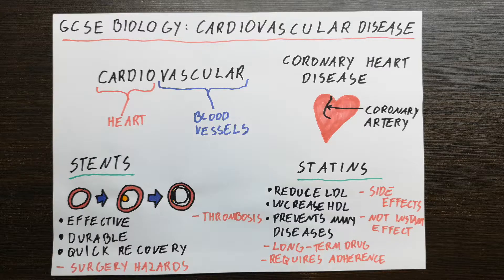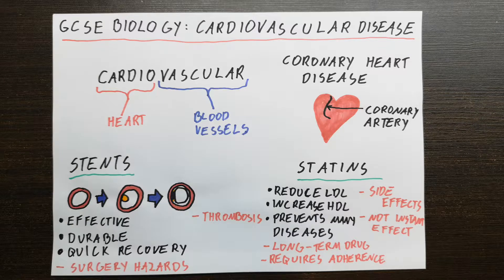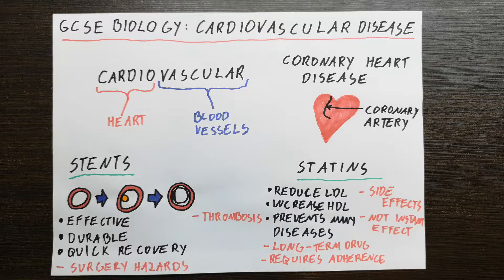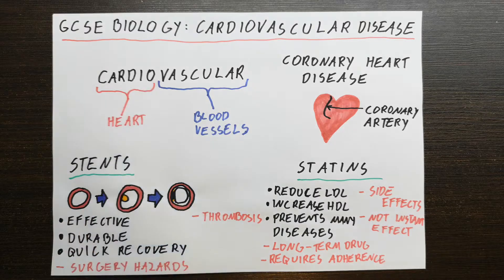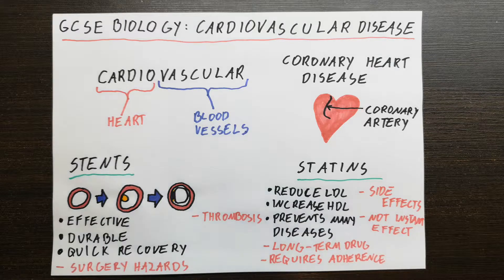What is cardiovascular disease? Cardiovascular disease is a term that covers diseases to do with the heart and diseases to do with the blood vessels. It's a big term that actually contains quite a few diseases. Cardio means heart and vascular means blood vessels. So cardiovascular disease is a disease of the heart or blood vessels.